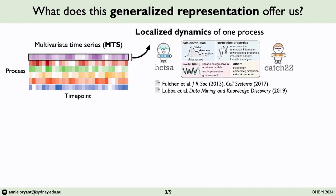One way to comprehensively quantify dynamical signatures of local activity would be to use the highly comparative time series analysis toolbox — HCTSA — that my supervisor Ben Fulcher developed during his PhD work at Oxford. This brings together thousands of interpretable time series features from across diverse disciplines, with clear algorithms that capture properties from data distribution, to model fitting, to information theory.